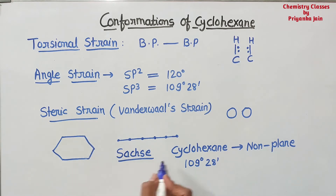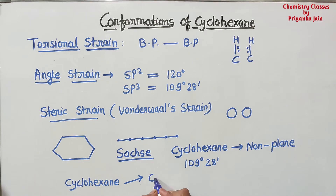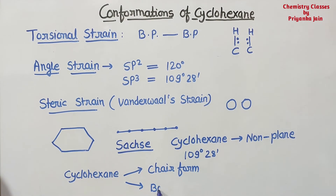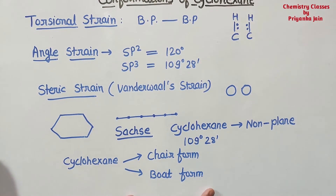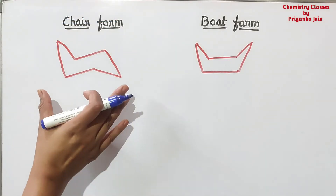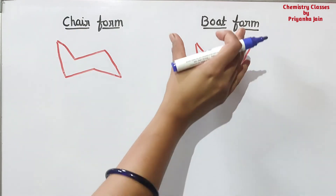In cyclohexane, there are actually two forms. Cyclohexane exists in two forms: one form is called the chair form and another is called the boat form. The chair form is more stable as compared to the boat form. We will now study about the chair form and boat form. This is the chair form — somewhat chair-like — and this is the boat form — somewhat boat-like.